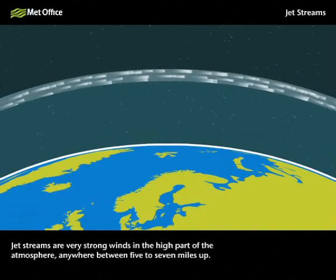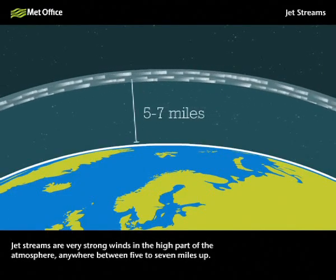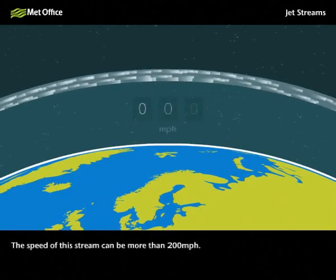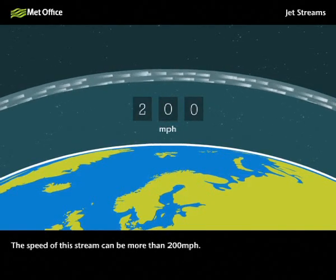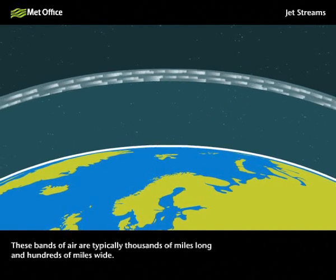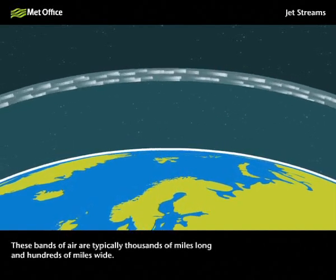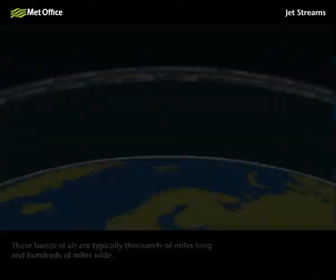Jet streams are very strong winds in the high part of the atmosphere, anywhere between 5 to 7 miles up. The speed of this stream can be more than 200 miles an hour. These bands of air are typically thousands of miles long and hundreds of miles wide.